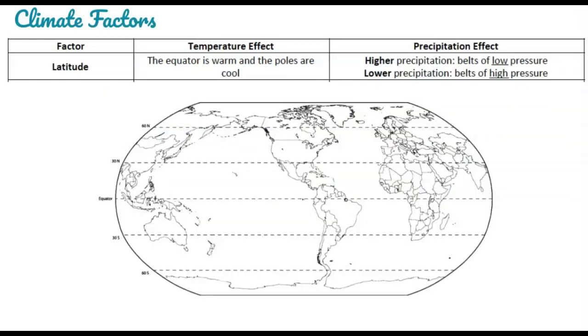So the first one is latitude. Latitude, of course, we've already talked about the effect that latitude has on temperature because the equator we know is the warm spot on the globe because it receives the most direct sunlight. And then as you move away from the equator in either direction, it gets cooler. So the coldest areas on the planet are the poles.